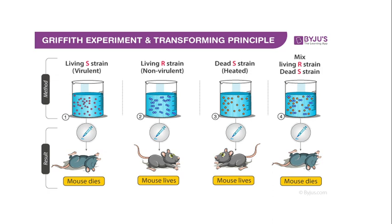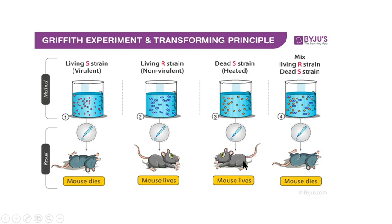Griffith performed a variety of experiments. In one experiment he injected mice with the smooth strain — which was virulent — and after injection the mouse died. This was an expected result. He then injected mice with the rough strain, which was non-virulent, and again got the expected result: the mouse survived. In the third case, he heat-killed the S strain and injected it into the mouse. The heat had destroyed the bacteria, so after injection it did not have the ability to kill the mouse, and the mouse lived.